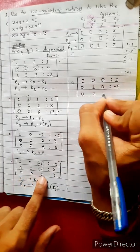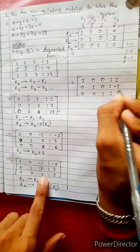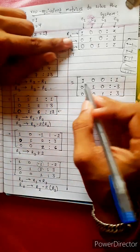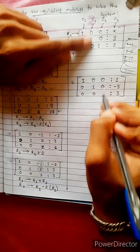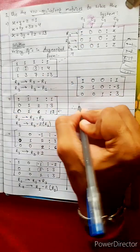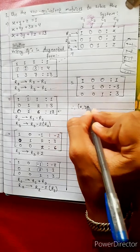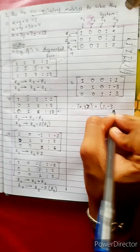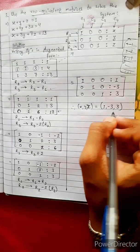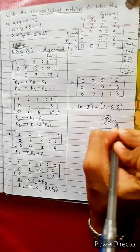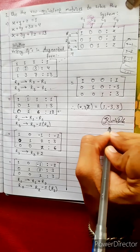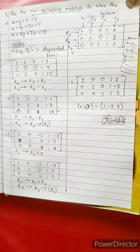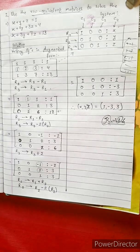The final reduced matrix has diagonal entries 1, 1, 1 and all other elements 0. Therefore X, Y, Z equals 1, negative 3, 3. That is the answer. Bye bye.